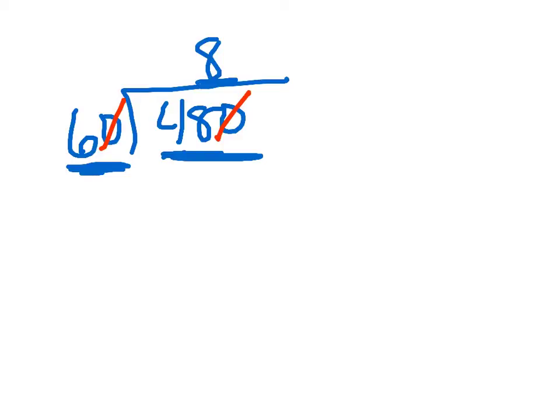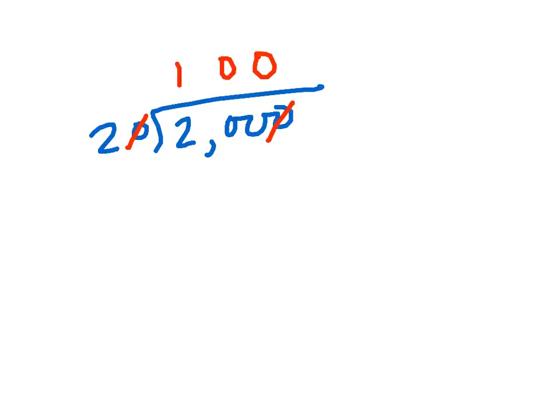It's just easier to solve when you're able to cancel out those zeros on both sides. Let's try a couple more. Let's say 2,000 divided by 20. Well, I can cancel out a zero here and a zero there. And then I would easily be able to say that 2 goes into 200 one hundred times. That would be the same as saying 20 goes into 2,000 one hundred times. When you're able to cancel a zero out on the divisor and the dividend, it makes it a little bit simpler to figure out the answer.